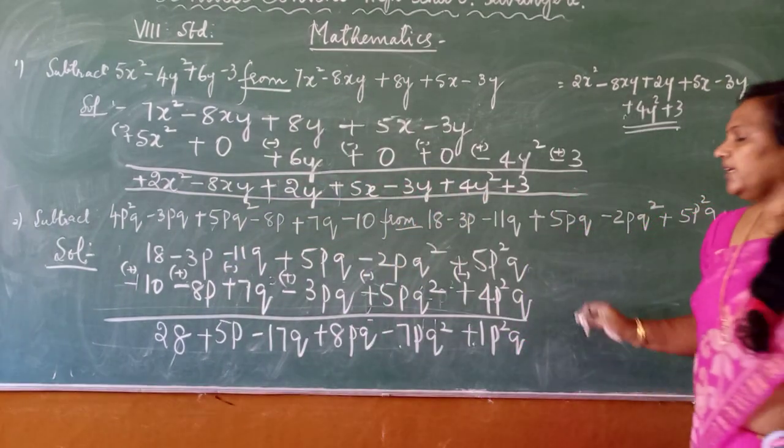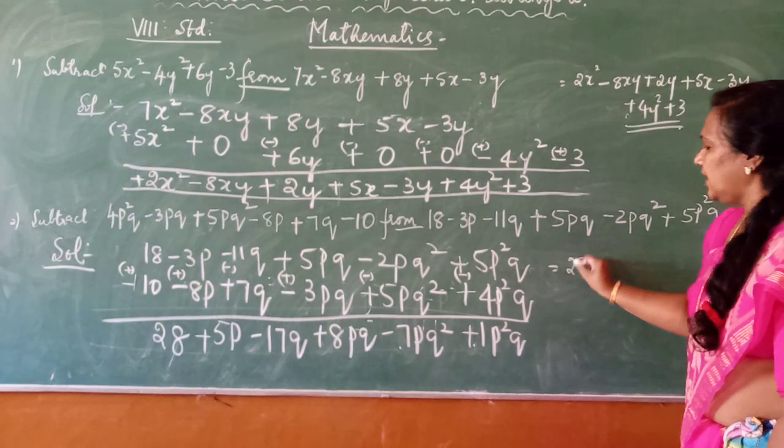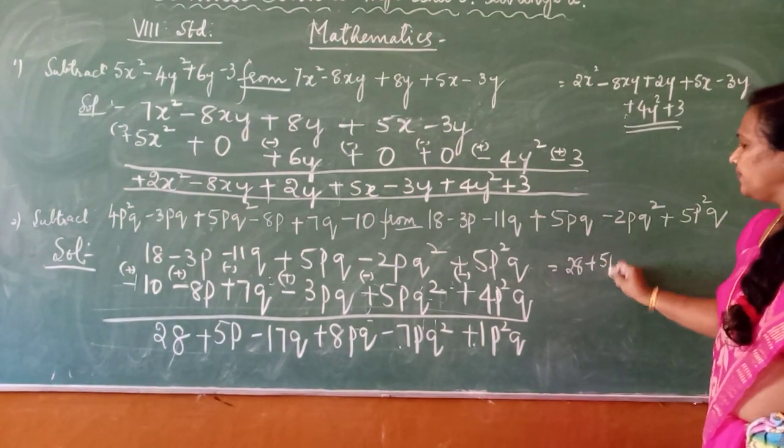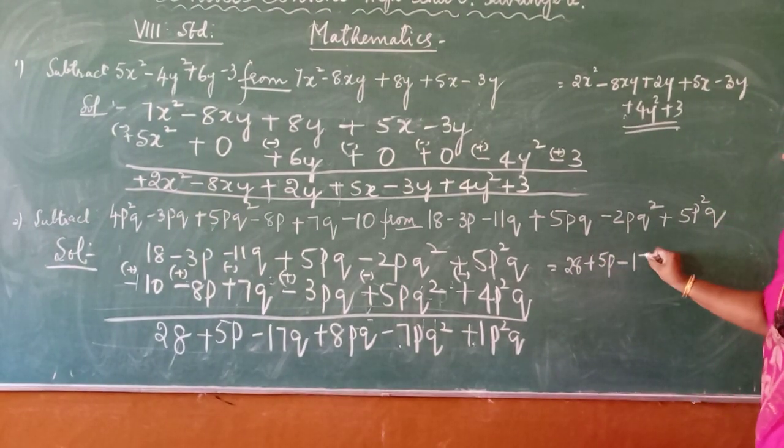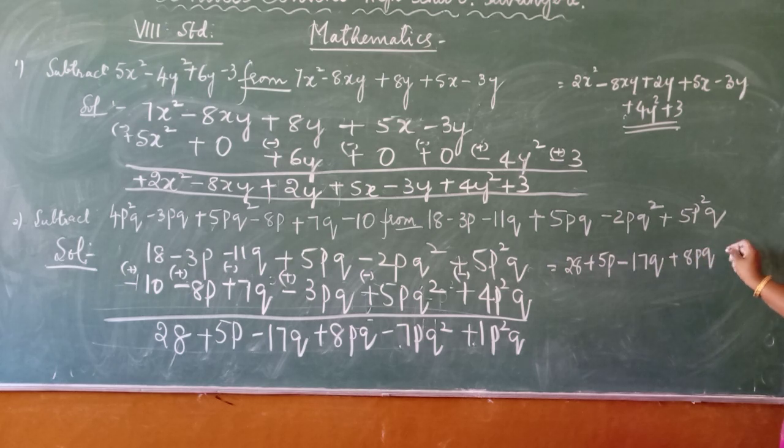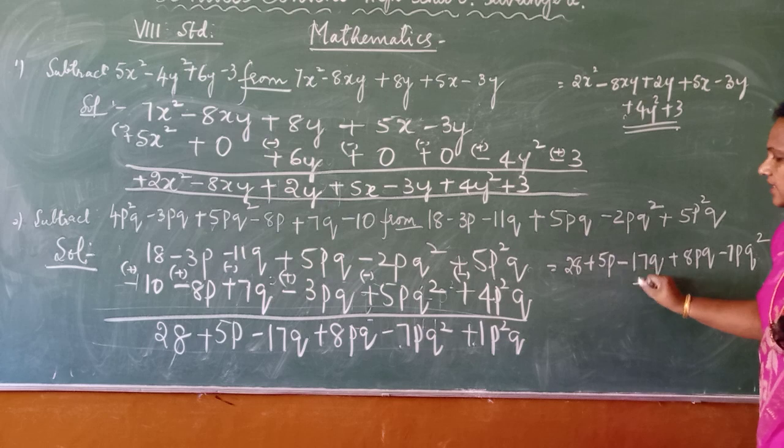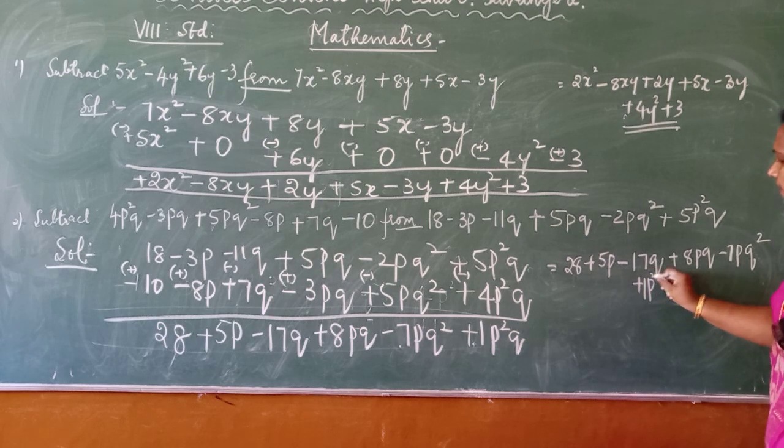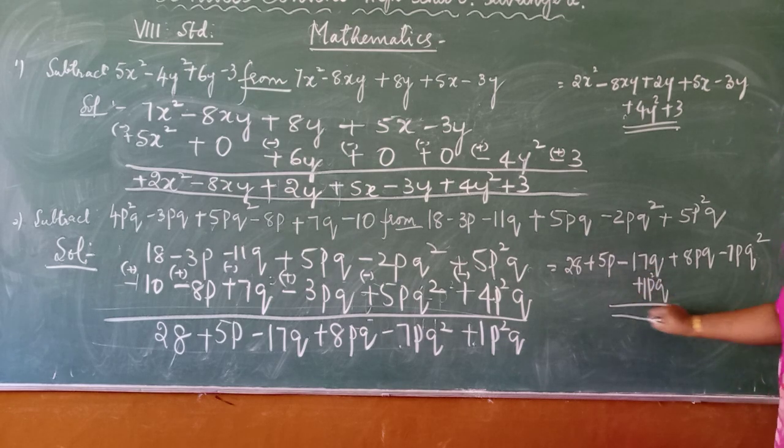So final answer is 28 plus 5P minus 17Q plus 8PQ minus 7PQ square plus 1PQ. And another answer. That's all.